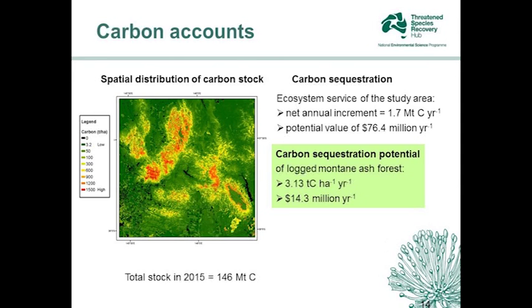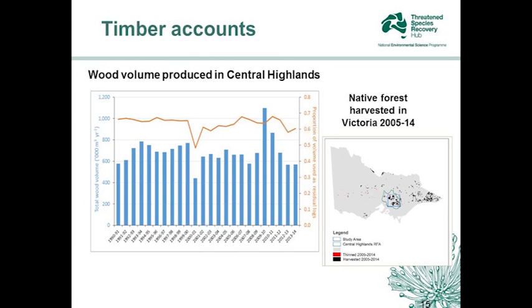We can look at carbon accounts. To some extent this is a little bit mythical because we don't have the carbon methodology yet. But we can look at the carbon sequestration potential — how much carbon you can add to this system. These are some of the most carbon-dense forests in the world. You can look at that in terms of a nominal price under the Emissions Reduction Fund if the methodology was ever developed, and look at its value to the Victorian economy. We can also look at timber accounts — wood volume production has been largely even across the period 1991 through to 2014. Even though about 50,000 hectares of ash forest was burnt in about three or four hours in 2009, the wood volume flow hasn't actually changed in that time.